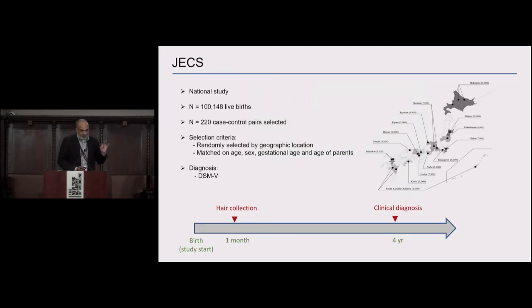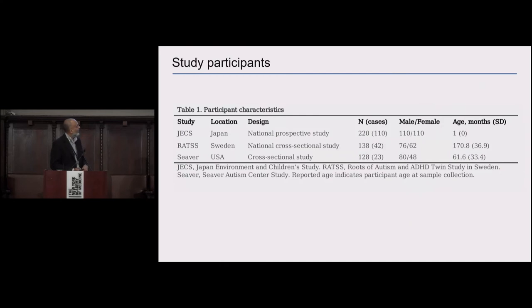I'll only describe the study design in Japan because that's the strongest study aspect. It's a national recruitment. So every prefecture of Japan is covered. We have 100,000 samples already biobanked there. And we plan to analyze several thousand of them. For this first stage, we just analyzed 220. But the key to this is the prospective nature of the study. Samples collected at one month, a single strand of baby hair, and then gold standard analysis four years later using DSM-5 criteria.